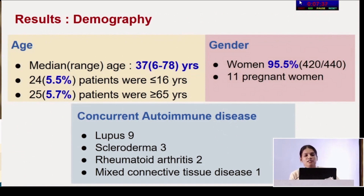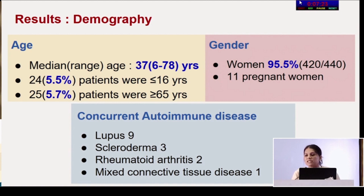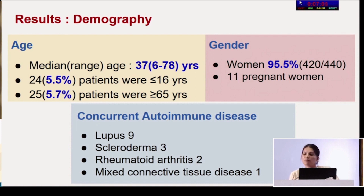The median age of patients was 37 — younger than the 50–60 years typically cited for Sjogren's onset — ranging from 6 to 78 years. Twenty-four patients were less than 16 years (5.5%), and close to 6% were over 65. Women contributed 95.5%, and 11 were pregnant at diagnosis. Concurrent autoimmune diseases included lupus in 9, scleroderma in 3, rheumatoid arthritis in 2, and mixed connective tissue disease in 1.